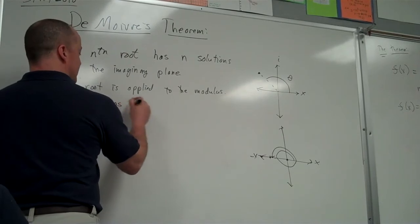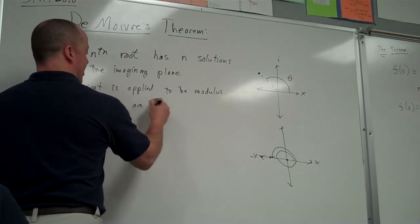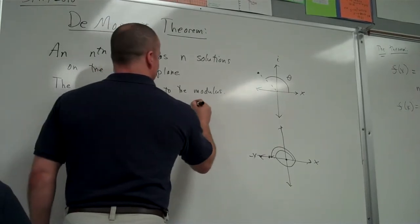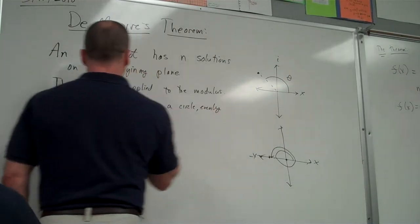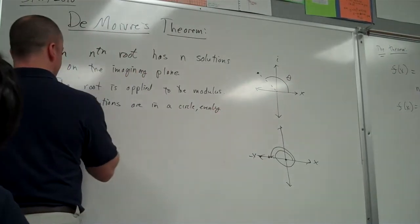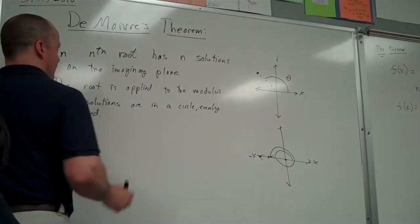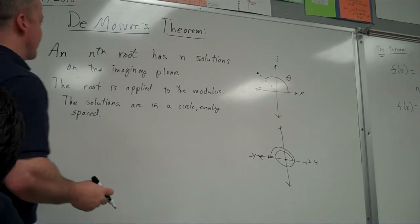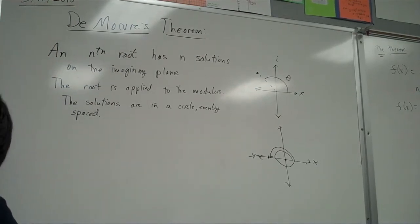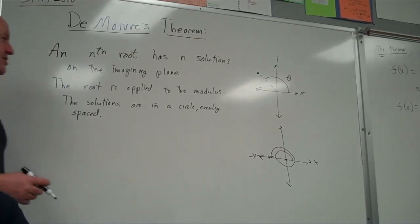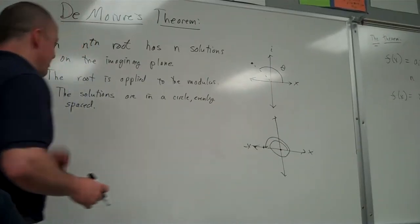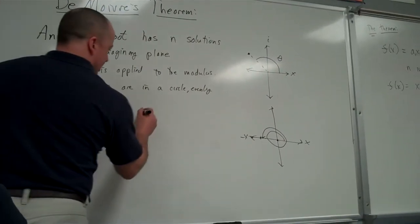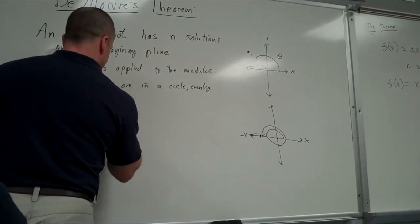The solutions are in a circle evenly spaced. An nth root has n solutions on the complex plane. The root is applied to the modulus. The solutions are in a circle evenly spaced. This is 95% of what you need to know right here. The rest we'll do by example.